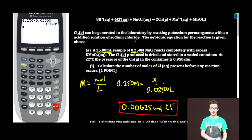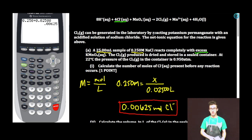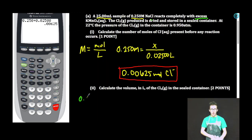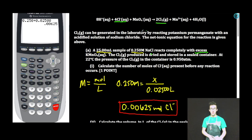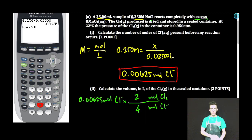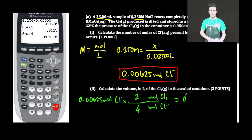We know that chloride ion is our limiting reactant because it reacts completely with excess KMnO4. The relationship between chloride ion and chlorine gas is 4 to 2. So 0.00625 moles chloride ion times the molar ratio of 2 moles chlorine gas to 4 moles chloride ion gives 0.003125 moles chlorine gas.